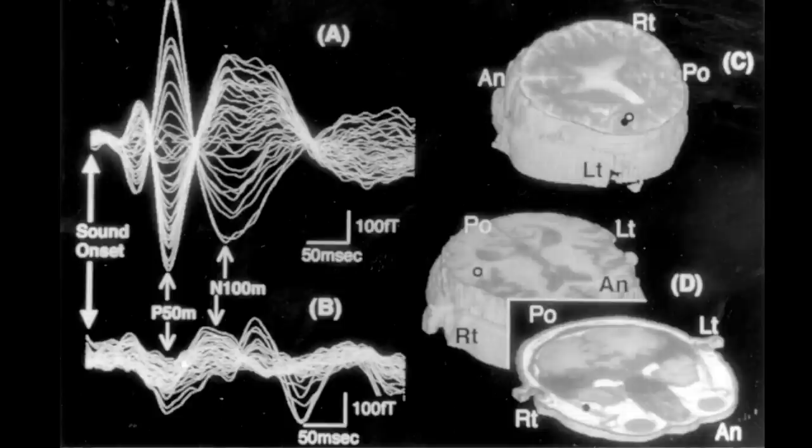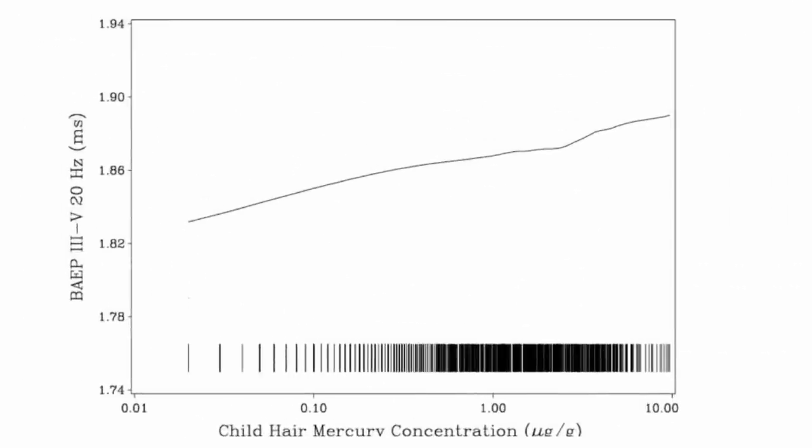The longer the delay, the slower your nerve impulses are traveling. And so here's the graph. This is delay versus mercury content in their hair.